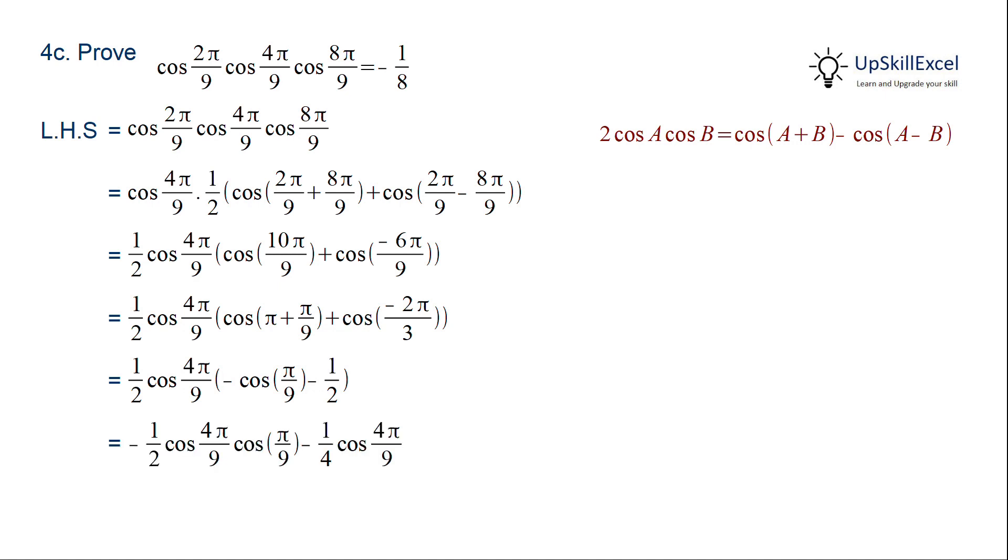Now we can remove the bracket and do the multiplication, giving us two terms. Here again, the first term is of the format cos A multiplied by cos B.